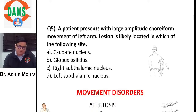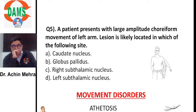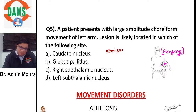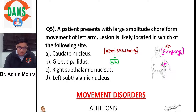A patient presents with large amplitude choreiform movement in the left arm — a flinging movement. Such a flinging movement is hemiballismus. Hemiballismus seen on the left side means the lesion is in the contralateral — right — subthalamic nucleus. So if the problem is on the left side, the right subthalamic nucleus is the site of the lesion.